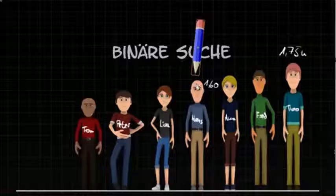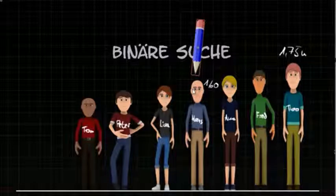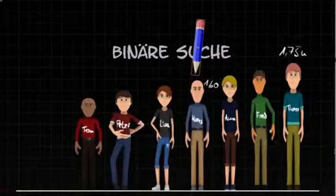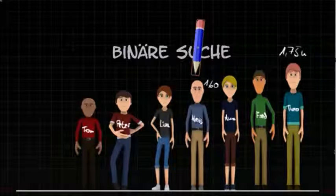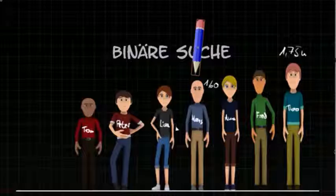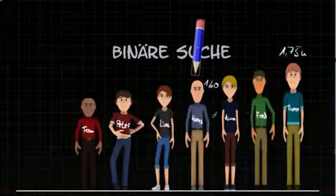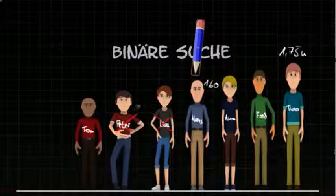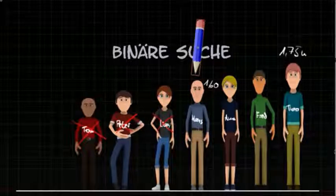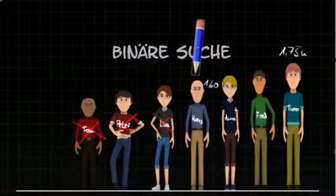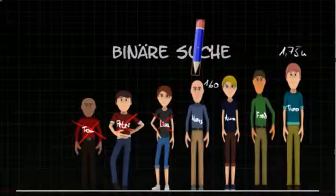Now we can see that if the list is sorted, which is the case here, we don't have to search the area to the left of Hans. We only have to search in the area to the right of Hans. That means Lisa, Peter and Tom are not relevant, and we only have to deal with Anna, Fred and Theo.